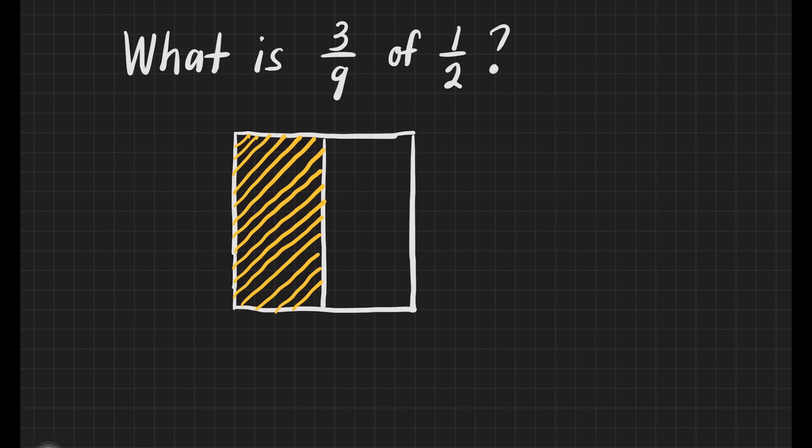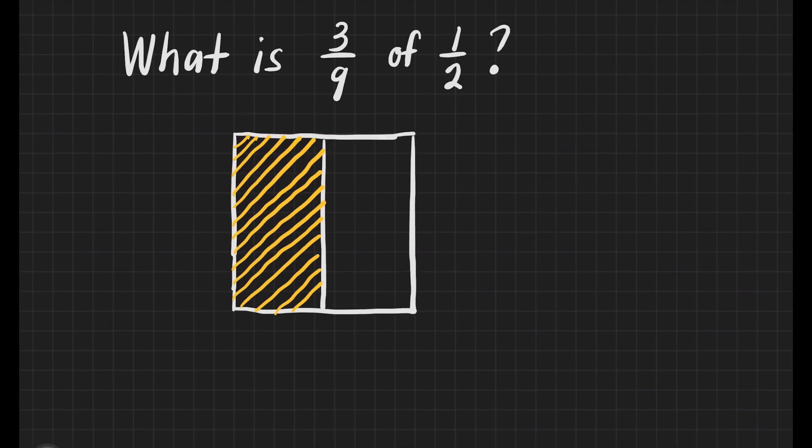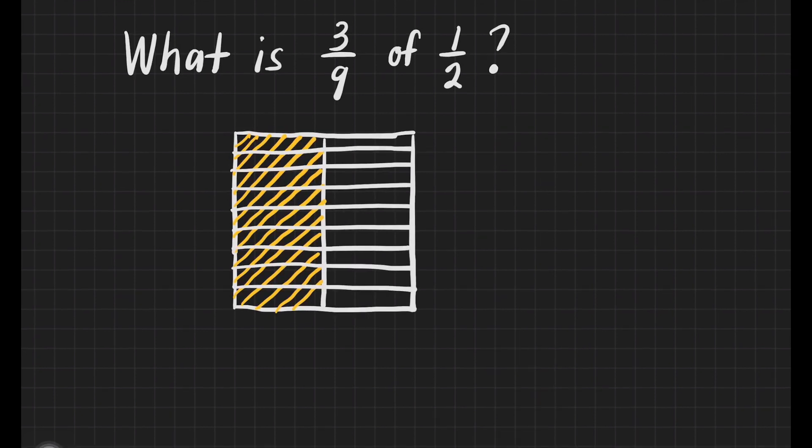This time, we will divide this box into 9 equal parts. Let's have that. That's 1, 2, 3, 4, 5, 6, 7, 8, and 9 parts.